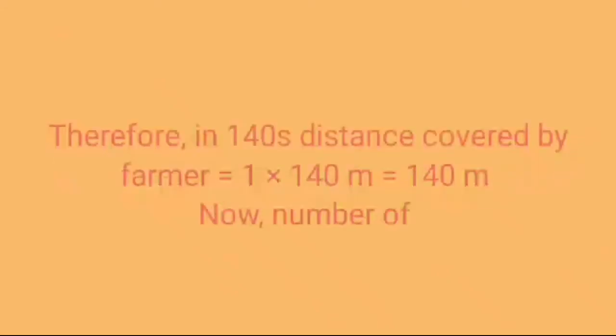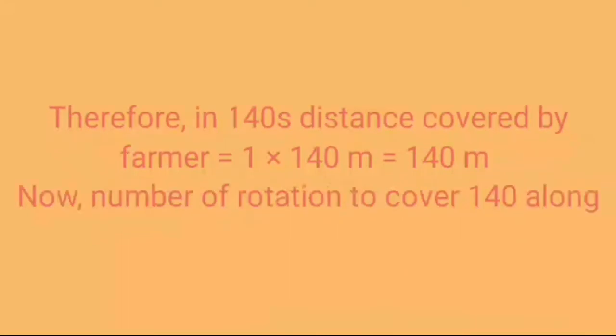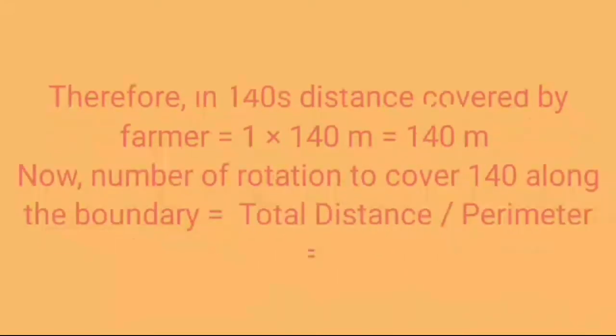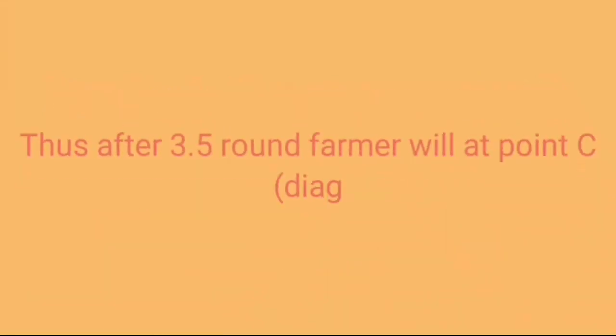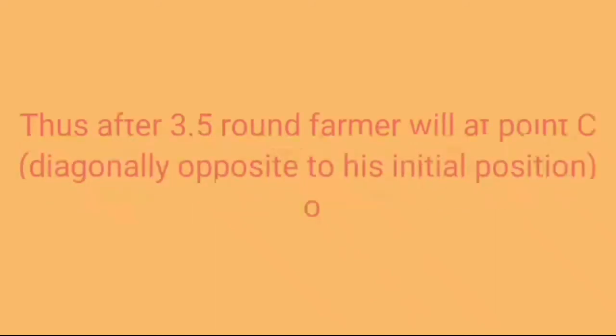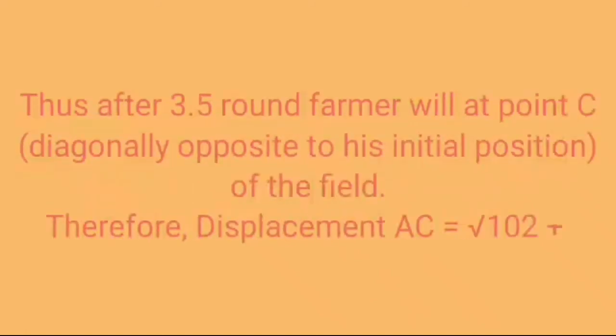Thus after 3.5 round farmer will be at point C diagonally opposite to his initial position of the field. Therefore displacement AC will equal to root 10 power 2 plus 10 power 2 will equal to root 200 which will equal to 10 root 2 meter.